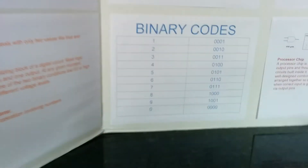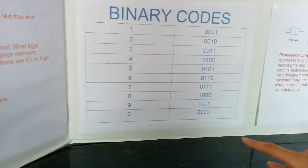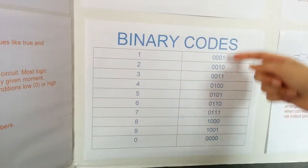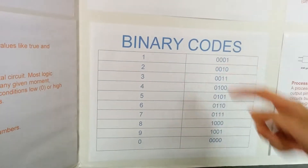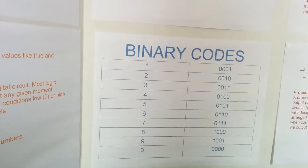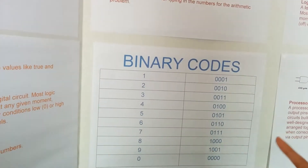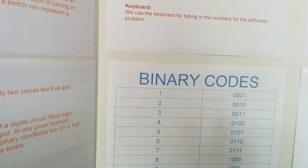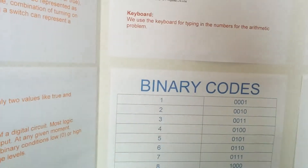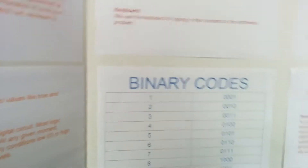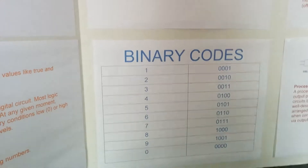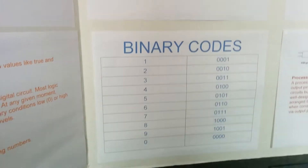Now let's look at binary codes, or you could say binary signals. Each number has a binary signal. Zero means no current — no flowing current. And one means there's flowing current. That's how the current inside the calculator shows what binary number is needed.